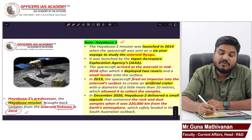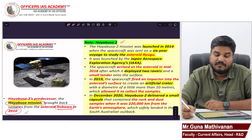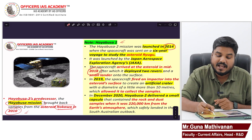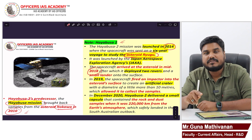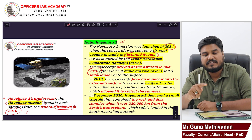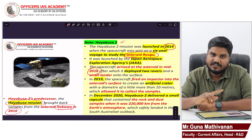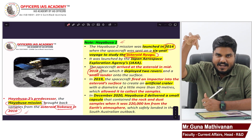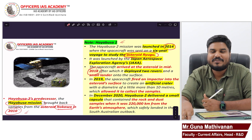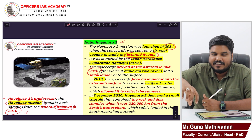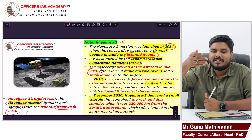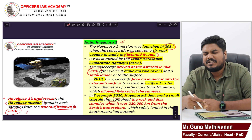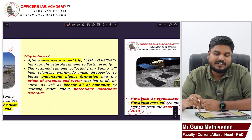Hayabusa 2 was launched in 2014 to study an asteroid called Ryugu. Japan's space agency sent a spacecraft with a lander and two rovers to Ryugu. The two rovers drilled, created an impact, and collected samples. Those samples came back in 2020. So these missions are not something new, but OSIRIS-REx returning its samples is why it was in the news recently.